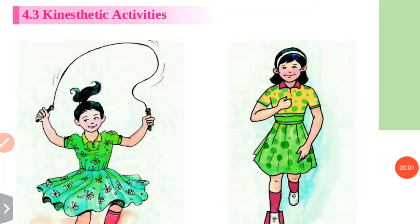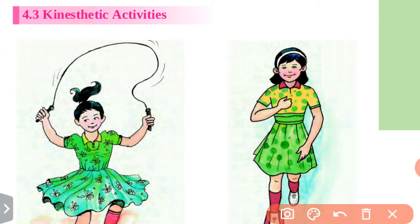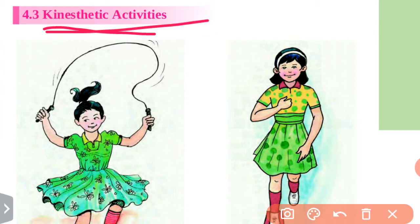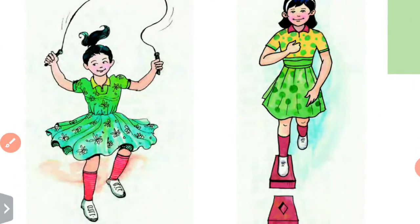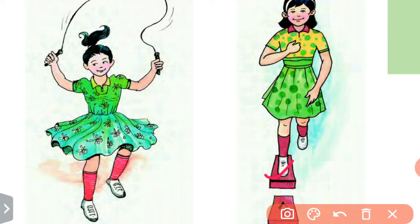Hello friends, in today's lecture we are going to learn first standard subject Play Do Learn, that is kinesthetic activities. Kinesthetic means relating to a person's awareness of the positions and movement of the parts of the body by means of sensory organs in muscles and joints. That means kinesthetic activities involve all the parts of the body — legs, knees, heels, and everything — all parts of the body are used in these activities.